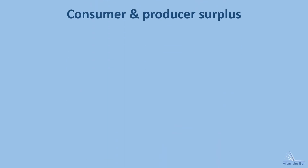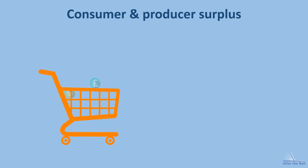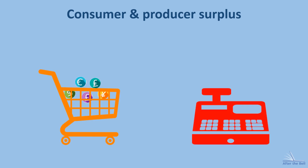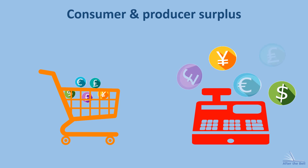Hello and welcome to our video on consumer and producer surplus, where we'll be thinking about who stands to gain whenever a purchase is made. There are two sides to every transaction: the consumer who wants the lowest price possible and the producer who wants to sell at the highest price they can get away with. Whenever a price is agreed on, there'll usually be some element of surplus for both the consumer and the producer.